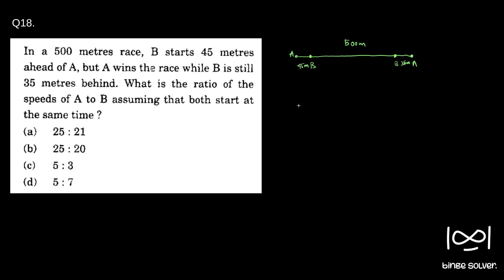So we can use the simple formula: time equals distance by speed. So here, the time that took for A to cover this 500 meters is same as the time it took to cover this distance for B.